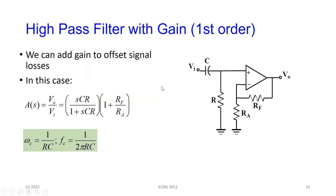Once again we can adjust the gain by adding the feedback and ground resistors on the non-inverting amplifier, and again we restrict the gain to no more than three.